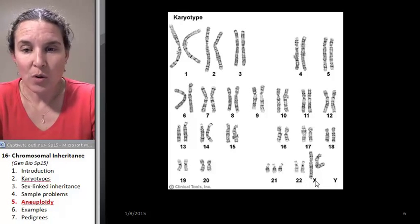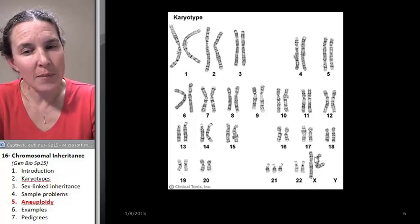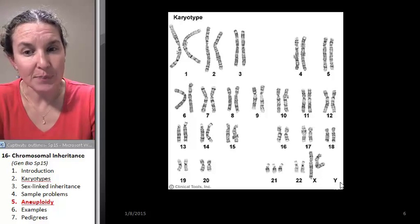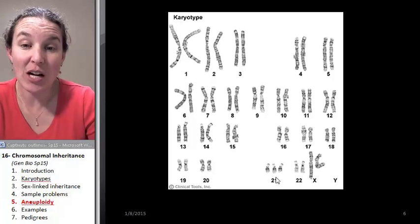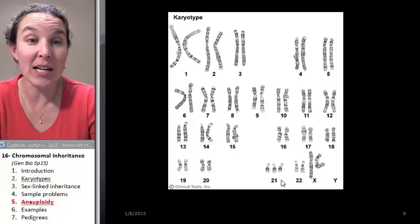Chromosome 22 is normal. The sex chromosomes, what do you see here? I see two X chromosomes. So this is a female child with trisomy 21 or Down syndrome.